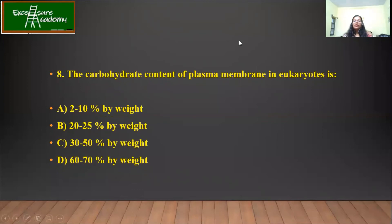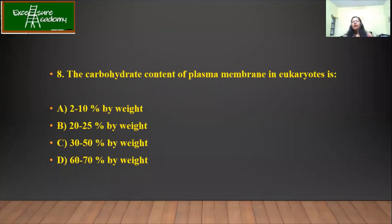What is the carbohydrate content of the plasma membrane in eukaryotic cells? Even if you don't know the answer, you should be able to guess it. We already know that on the plasma membrane, the amount of carbohydrate has to be very less because it is just helping in recognition or presenting as an antigen. The correct answer is 2 to 10% by weight.